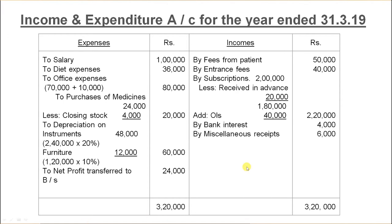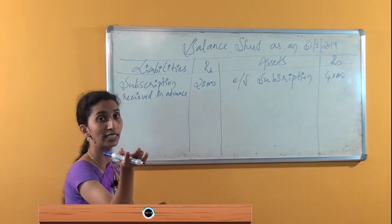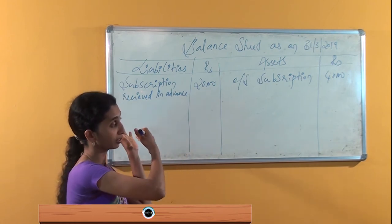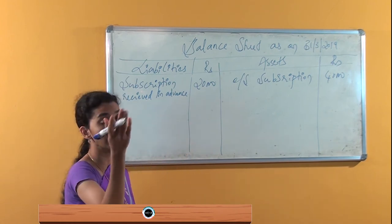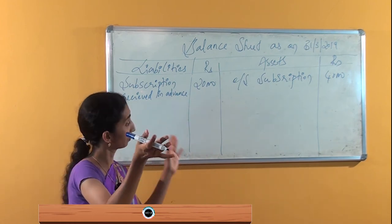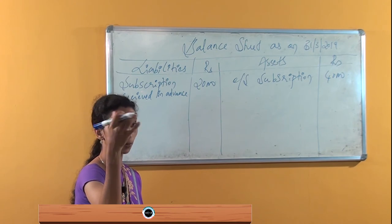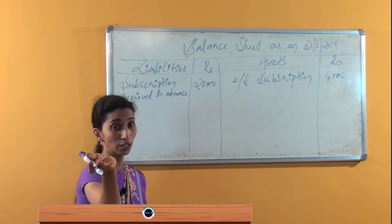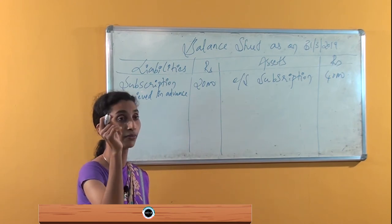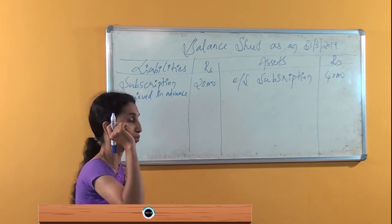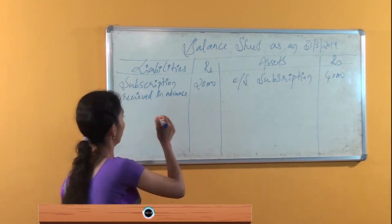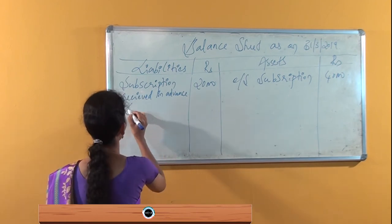So prepaid comes under the liabilities and outstanding comes under the asset side — both related to subscription income. If it is an expense, then outstanding comes under the liability side, and prepaid comes under the asset side, because prepaid under expenses is an income.